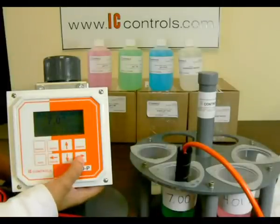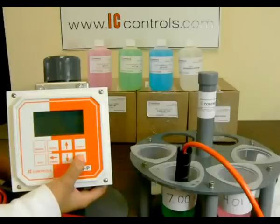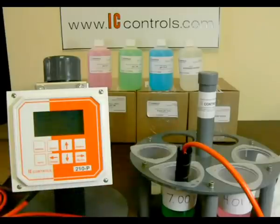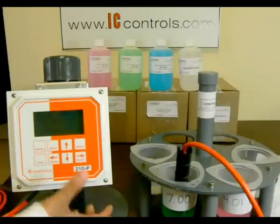Calibrate using your IC Controls pH analyzer. Select pH, Calibrate, Buffer 1, 7 pH. Wait for the analyzer to accept the calibration and select sample. You should receive a reading of 7 pH. It is okay if your reading is off by as much as .02.